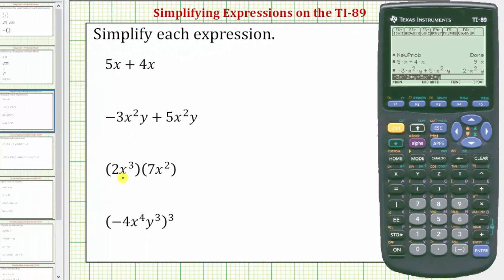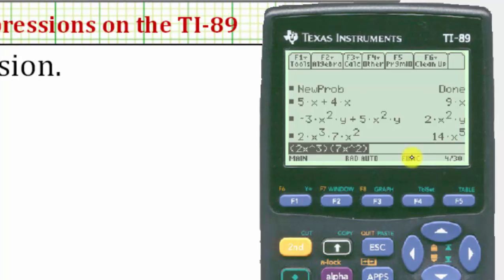Next we have 2x to the third, times 7x to the second. So we'll enter open parenthesis, 2x raised to the power of 3, close parenthesis, open parenthesis, 7x raised to the power of 2, close parenthesis, and enter. The expression simplifies to 14x to the fifth.